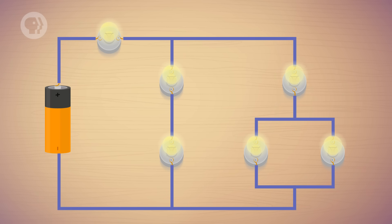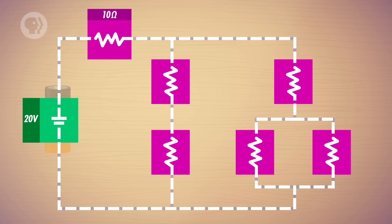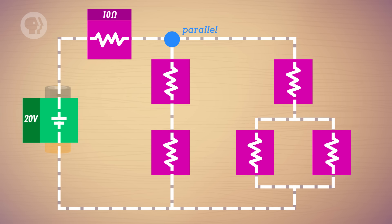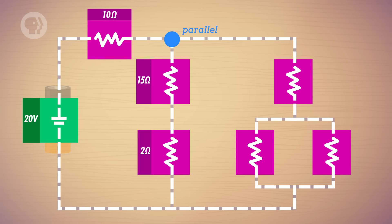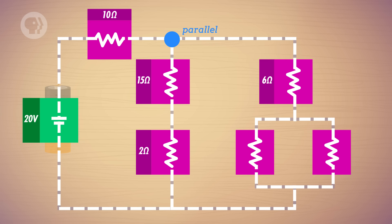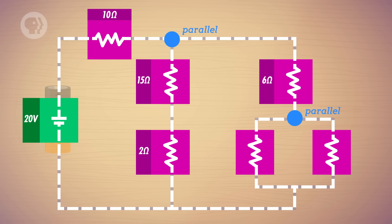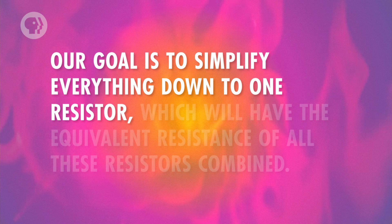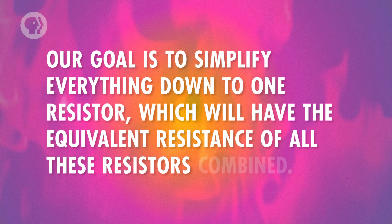Here's an example of a circuit with resistors in both series and parallel formations. Say you have a 20-volt battery immediately followed by a resistor of 10 ohms. Following that, there's a parallel formation of more resistors. One branch consists of two resistors in series, one of 15 ohms, and one of 2 ohms. The other branch has a 6 ohm resistor, and then another parallel formation of resistors, 3 and 5 ohms each. Our goal is to simplify everything down to one resistor, which will have the equivalent resistance of all these resistors combined. With that equivalent resistance, you can then know what the resulting current is in the circuit. Then, using Ohm's law, you can calculate the voltage across, and the current through, each resistor.